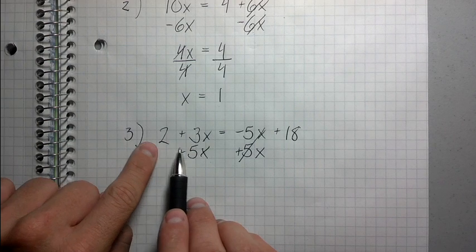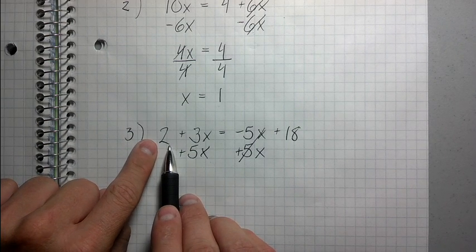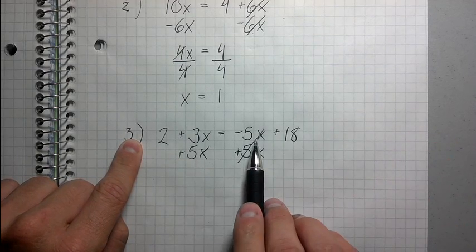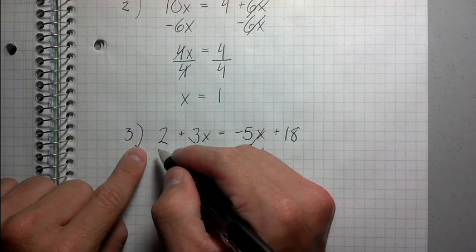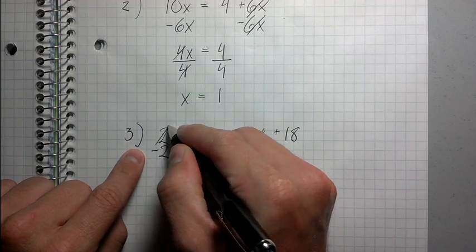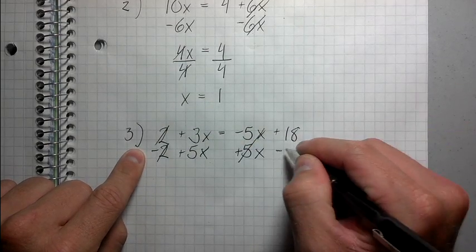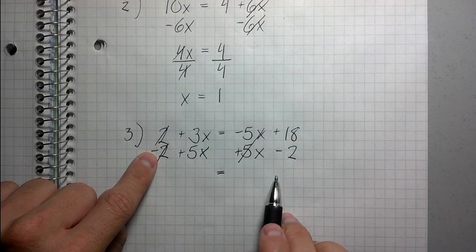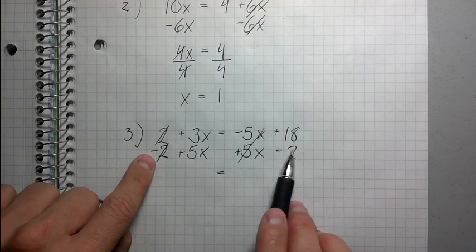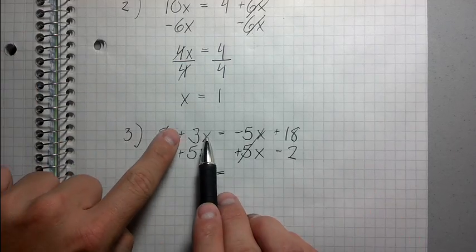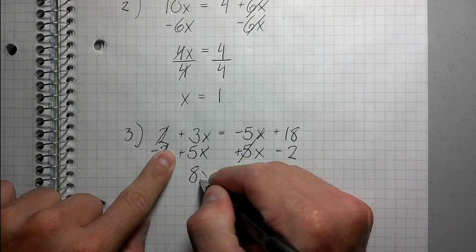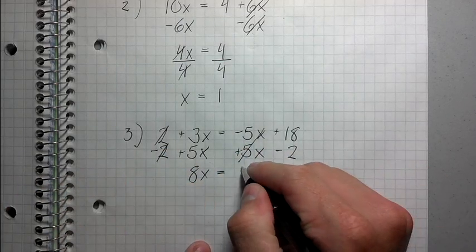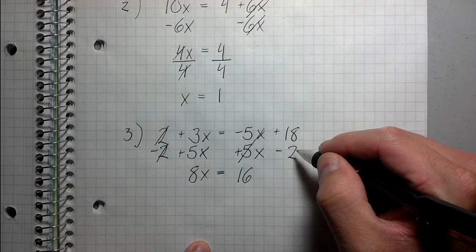Now I want to get rid of this 2 because I want to bring all the numbers to the right side, just like I brought all the x's to the left side. To get rid of a positive 2, I'm going to subtract 2 from both sides. So now, let's rewrite this. 3x and 5x make 8x. Positive 18 and negative 2 make positive 16 because 18 minus 2 is 16.